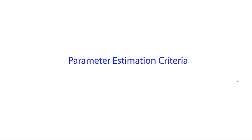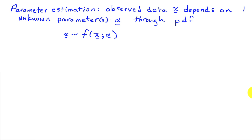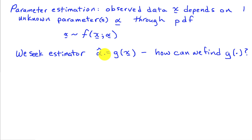In the estimation problem, we observe some data x and we want to identify or estimate a parameter that was responsible for producing that data. The question is how do we choose some function of the observation to estimate that parameter? We're going to look at some criteria here in this particular lecture.